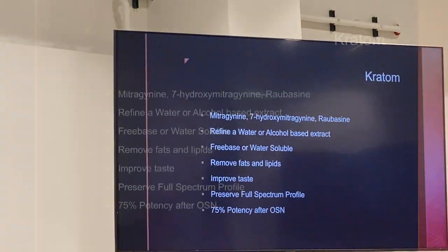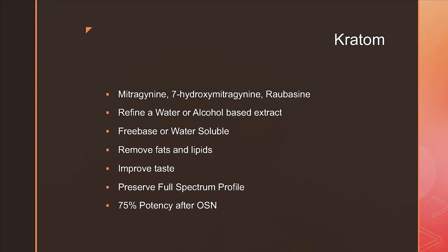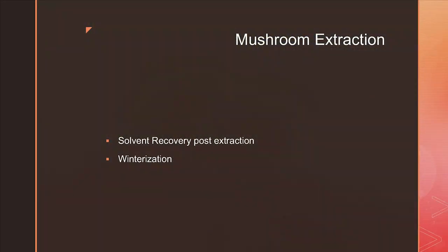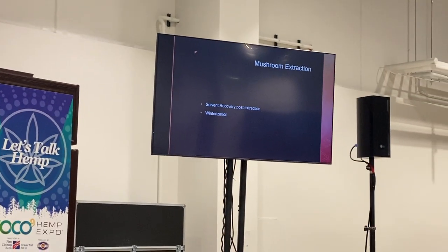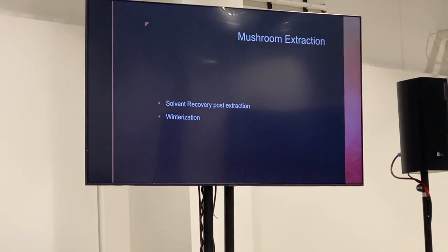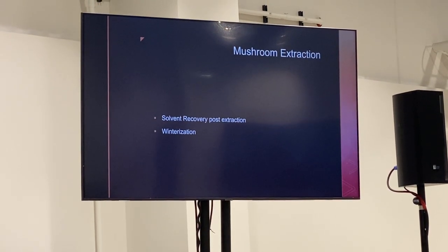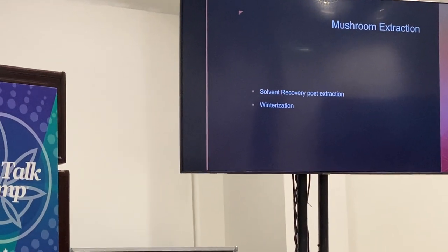In kratom and kava as well, there's significant interest because you can remove a lot of the taste out of kratom extracts while still producing a full-spectrum extract. In the right SOP, whether water or solvent based, you can generally produce a full-spectrum crude with a potency of around 75%. For mushroom extraction in general — not just psilocybin — you can do solvent recovery or winterization, and the winterization will remove much more than just fats. Whether it's a water-based or solvent-based mushroom extract, it removes all of the solvent so your downstream processes can be more efficient.